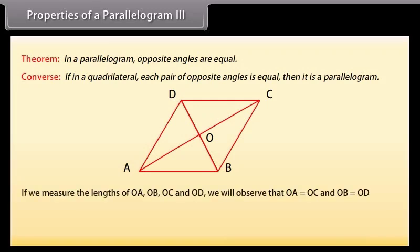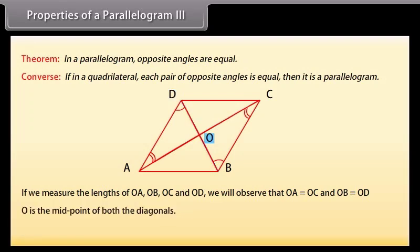If we measure the lengths OA, OB, OC, and OD, we observe that OA = OC and OB = OD. Or we can say that O is the midpoint of both diagonals. If we repeat this activity with more parallelograms, we find that O is always the midpoint of both diagonals. This gives us a new theorem: the diagonals of a parallelogram bisect each other.